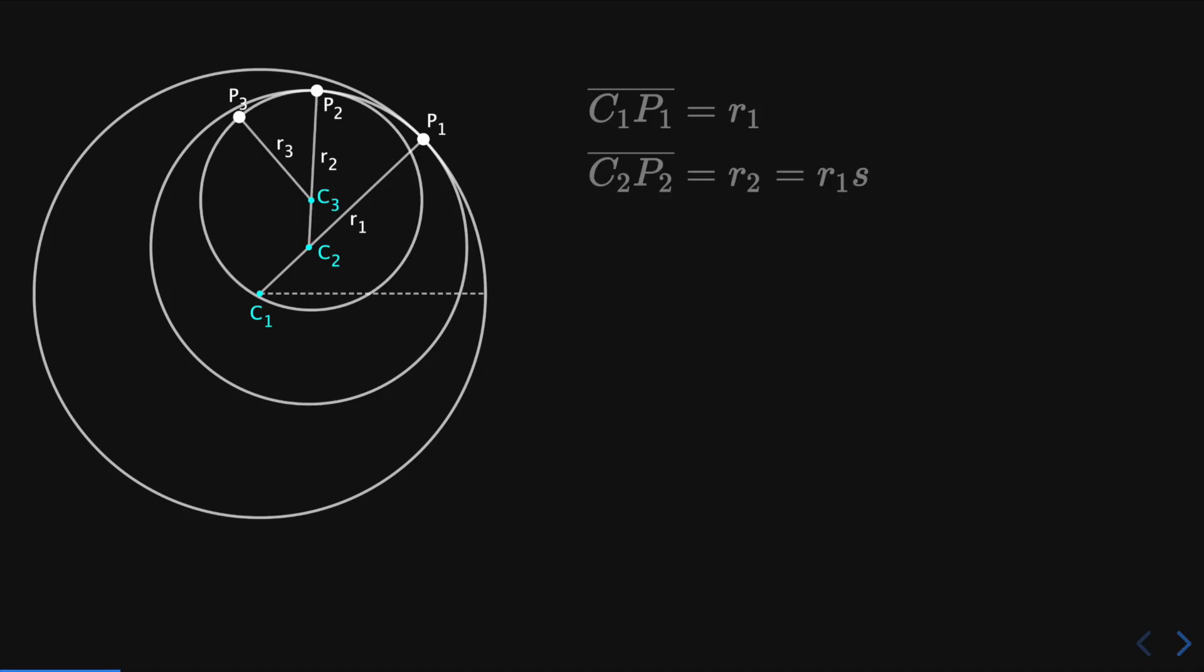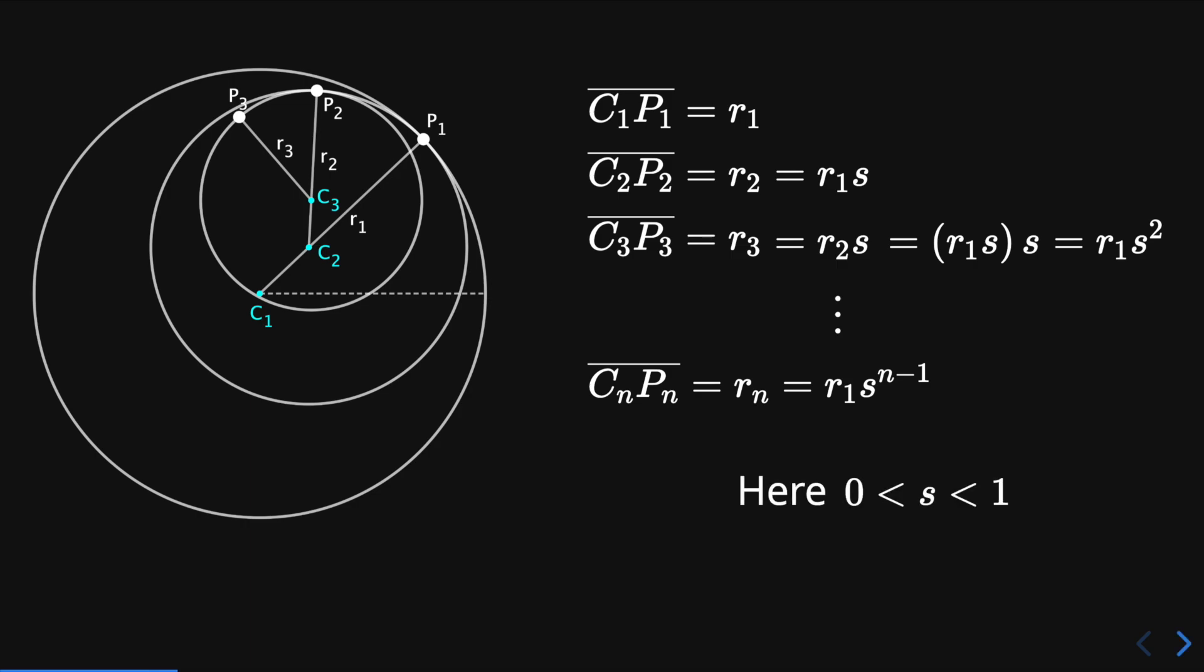Now the circle center at c3 has radius r3, which is equal to r2 times s, and r2 is equal to r1 times s, so we obtain r1 times s squared. We continue with this process to obtain the general case r1 times s to the power of n minus 1. Here s is greater than 0 and less than 1.